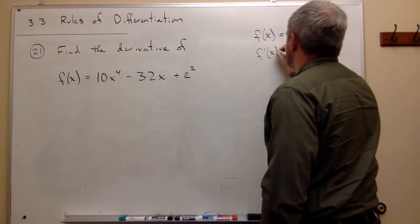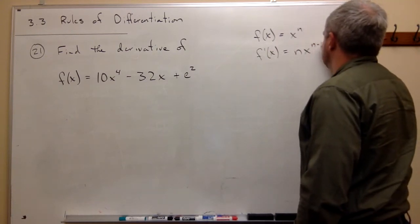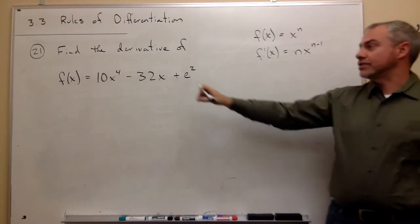then f prime of x equals n times x to the n minus 1 power. And we're going to use that today as we're doing this.